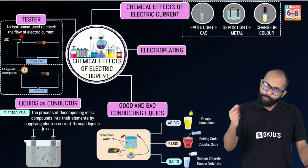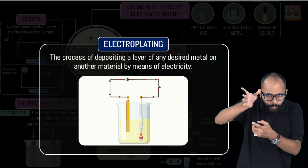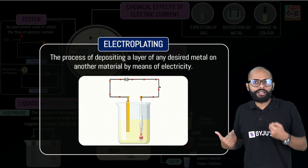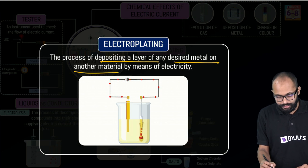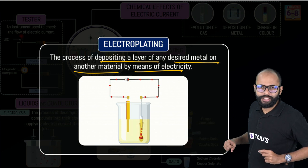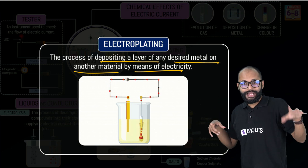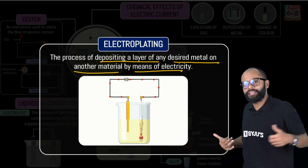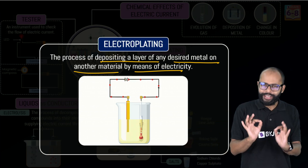Deposition of metal is a separate concept in this chapter called electroplating. Plating means coating — you coat one metal over another metal using electricity. It is the process of depositing a layer of any desired metal on another material by means of electricity. The desired metal — the one you want to coat with — goes on the anode. The object that needs to be plated goes on the cathode. The electrolyte will contain a compound of the anode metal.